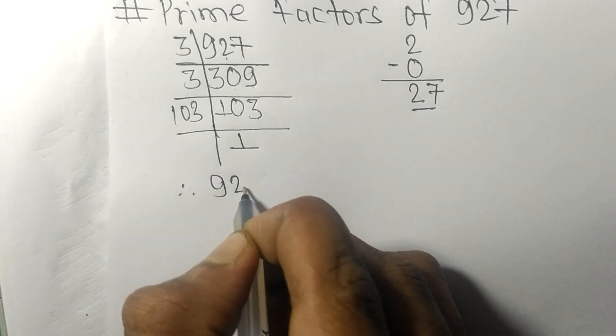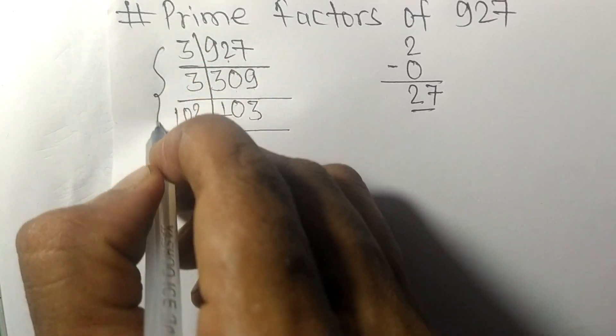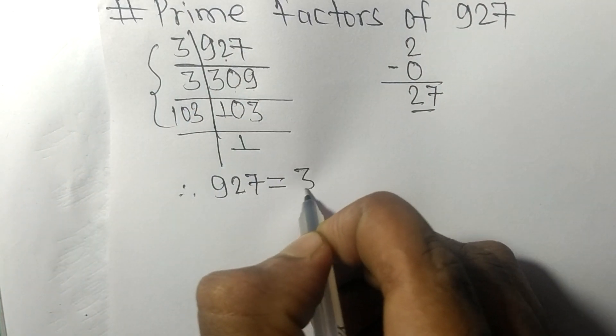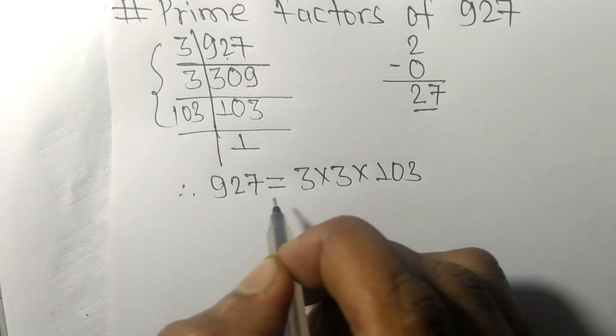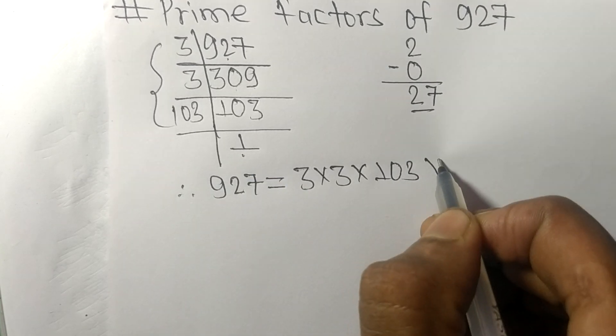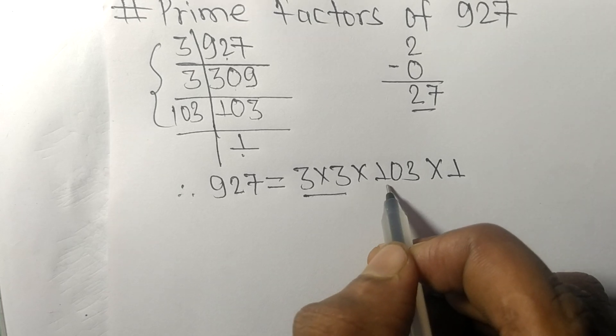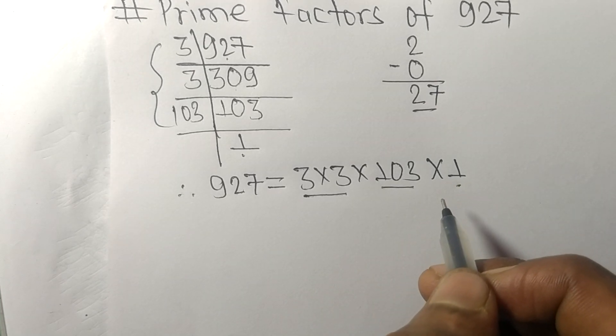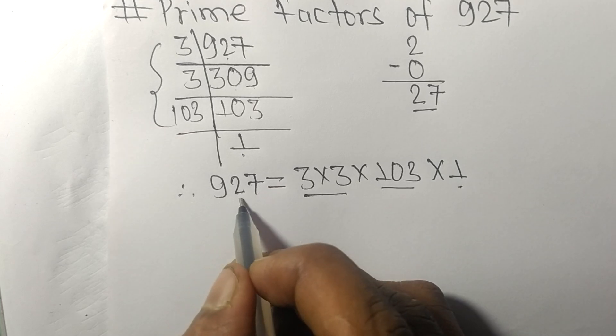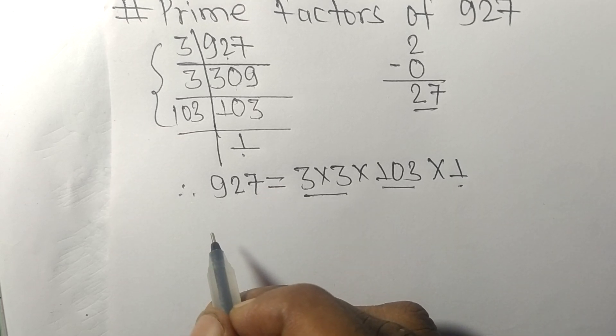927 is equal to, from this side, it is 3 times 3 times 103, from here it is 1. So these 3, 103, and 1 are the prime factors of 927. So this much for today, and thanks for watching.